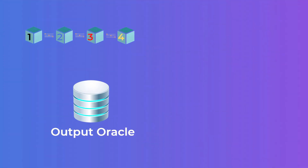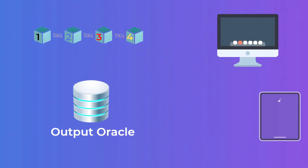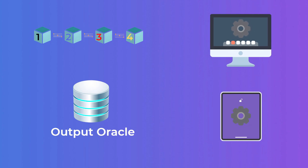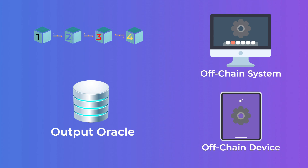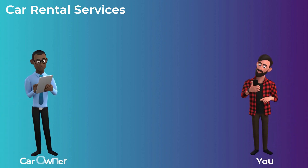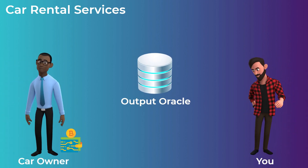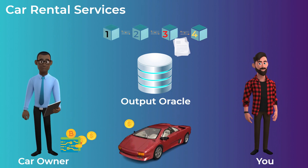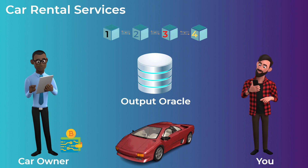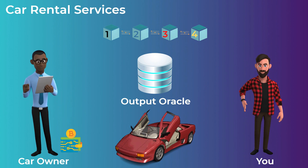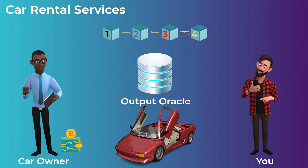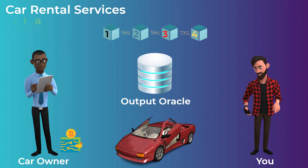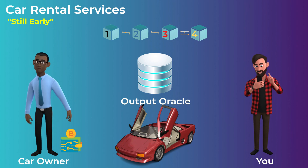Output oracles, on the other hand, get data from the blockchain and send it to a system or device in the real world — also called off-chain systems or devices. This type of oracle can be used in car rental services in the future. For example, after you pay the rent in crypto, the oracle gets your successful transaction information and sends it to the car system, and the car can then be unlocked with your key.